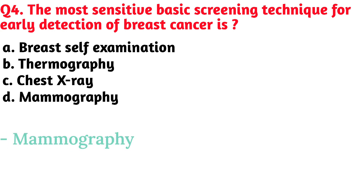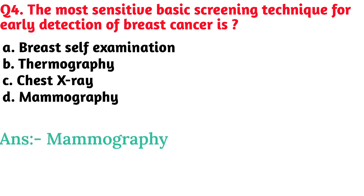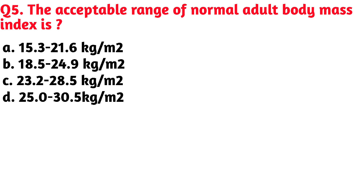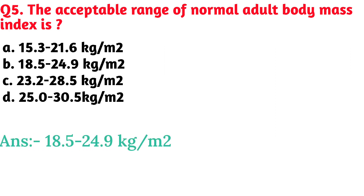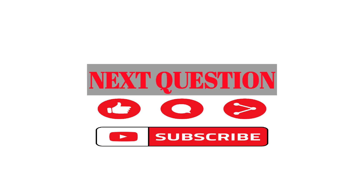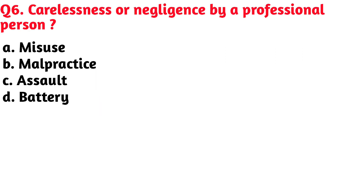The acceptable range of normal adult body mass index is — Option B, 18.5 to 24.9 kilograms per meter square, is the correct answer. Next question: carelessness or negligence by a professional person is — Option B, malpractice, is the correct answer.